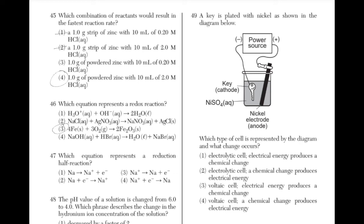Which equation represents a reduction half-reaction? In a reduction reaction, the atom will gain electrons, so the answer will be either 2 or 4. An Na atom has an electron configuration of 2,8,1, while an Na+ ion has an electron configuration of 2,8. When the Na+ ion gains an electron, it will have the electron configuration of an Na atom — making the answer choice 4.